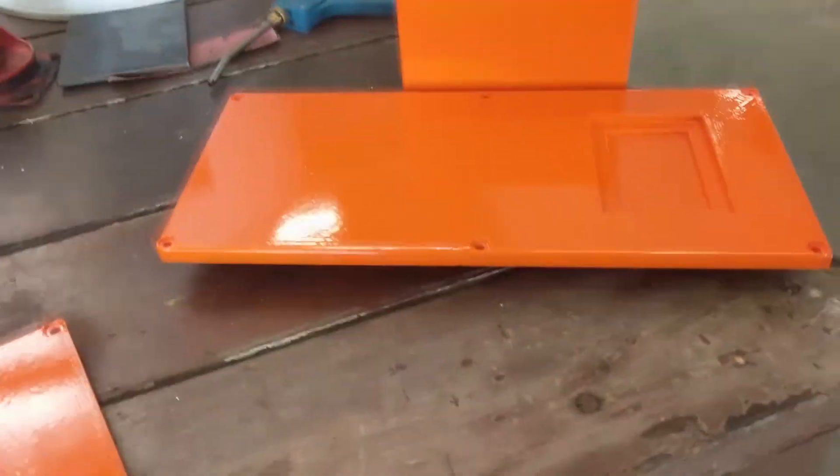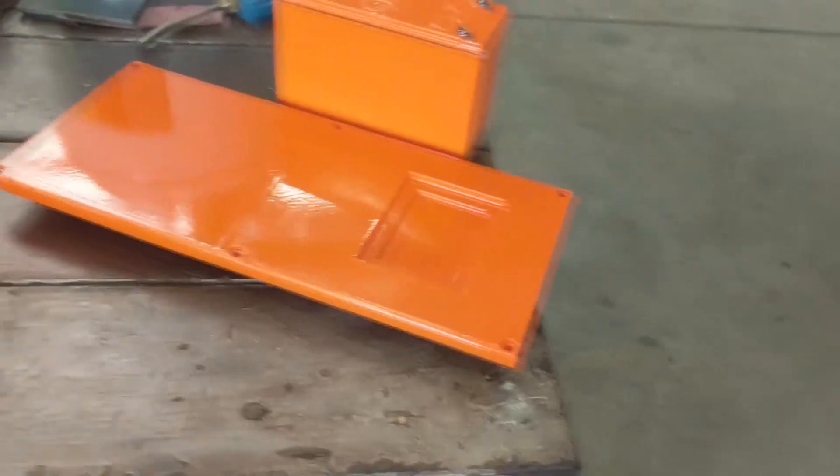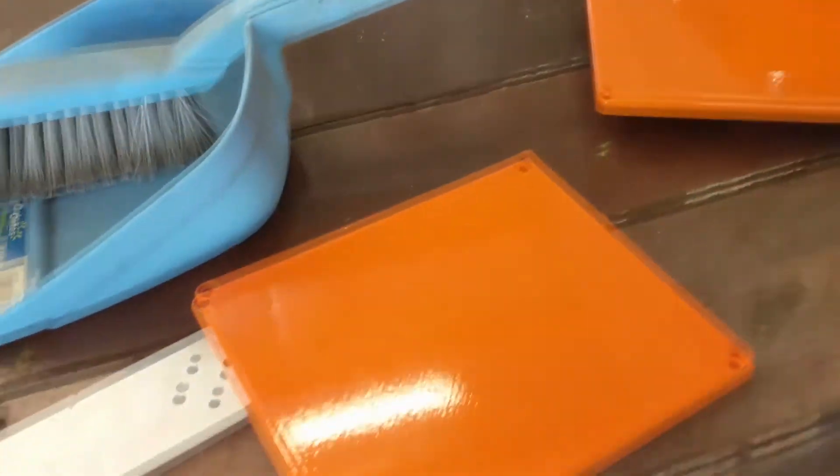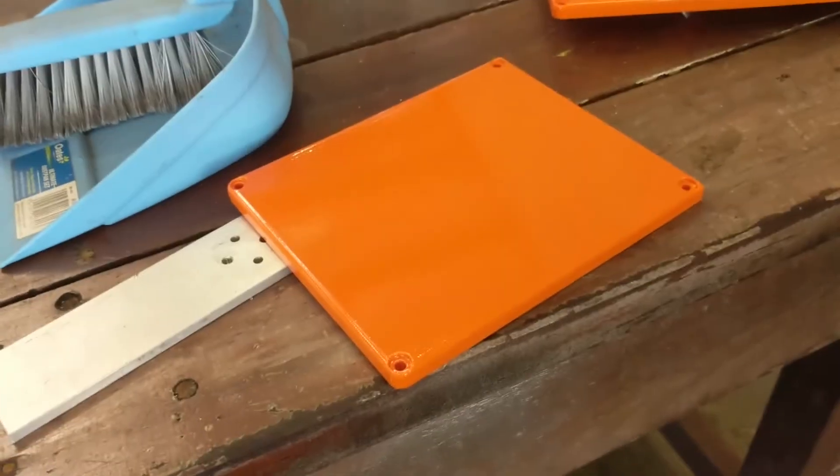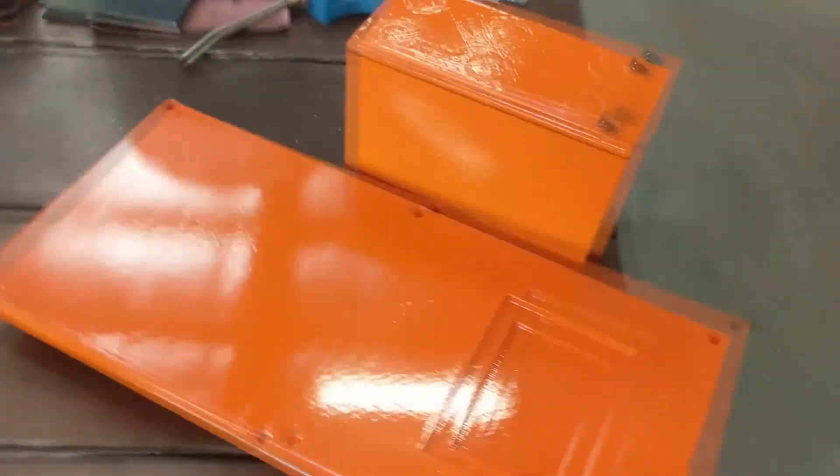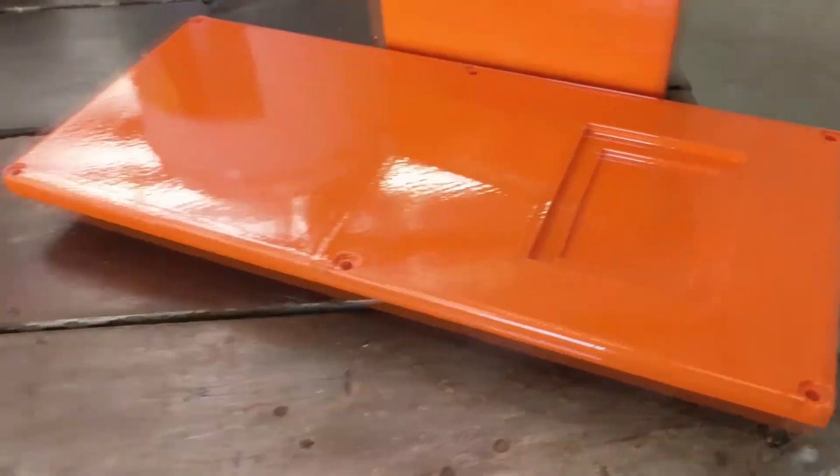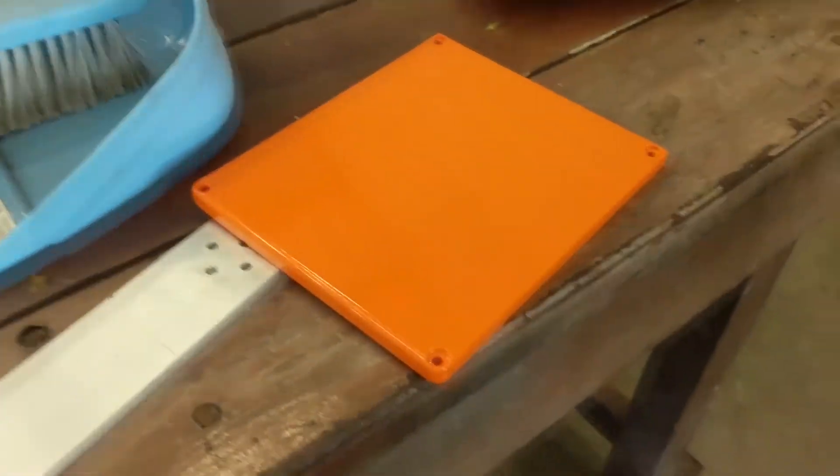And over here we've got the lid sections, catching the light there a little bit. It's not perfectly smooth but it's quite nice for a 3D print job. Once we get the stainless steel screws into this thing with the lid on, it will come together quite nicely and it paints a very nice picture.